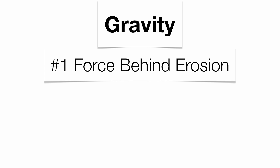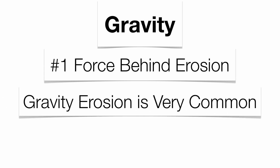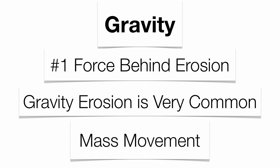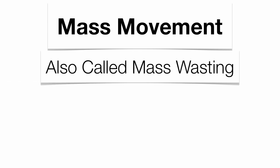Even though gravity is actually an erosional force itself, it's the number one force behind all erosion that takes place with water, wind, and glaciers. It's quite common, especially in areas that tend to get a lot of rainfall, where you get quite a bit of gravity erosion. That's what we call mass movement, and sometimes it has another name — mass wasting.